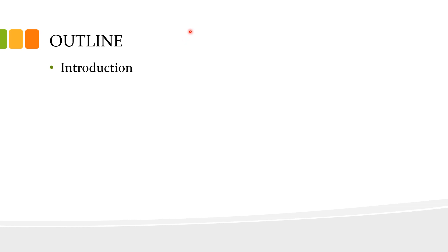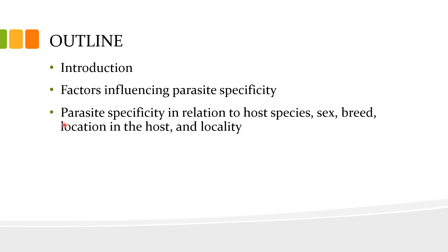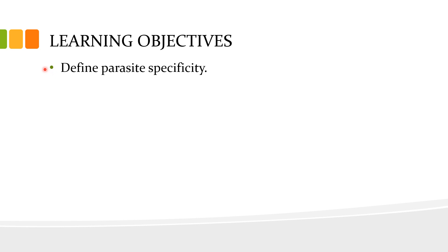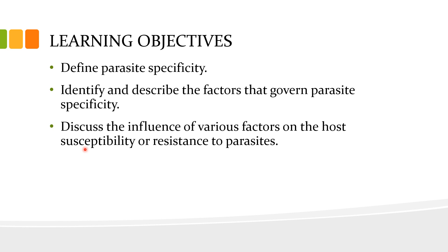For the outline of this presentation, the first part will cover the introduction to parasite specificity. The next part will discuss factors influencing parasite specificity in relation to host species, sex, breed, location in the host, and locality. The learning objectives are to define parasite specificity, identify and describe the governing factors, and discuss the influence of various factors on the host's susceptibility or resistance to parasites.